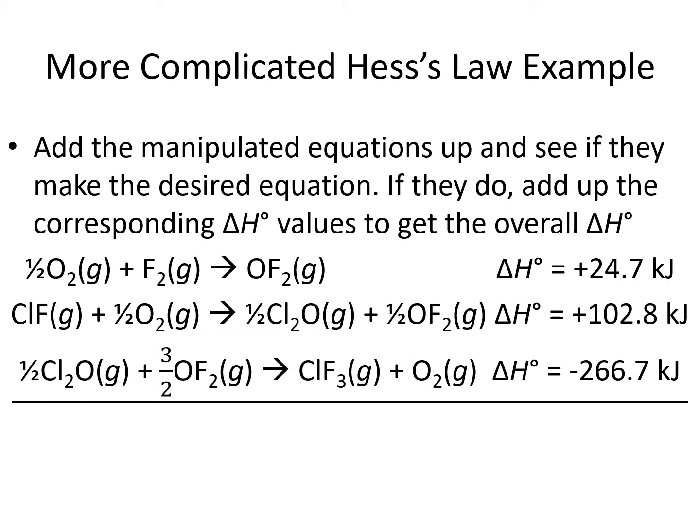Now that we've gotten our equations the way we think are probably correct, we're going to add them to double-check that the step equations add up to the overall equation we're trying to make. Some parts of the step equations are just there because they were part of the reaction that was measured — they end up cancelling out. Our first equation has 1/2 O2 and our second equation has 1/2 O2, both on the left, so they add to make one O2 molecule, which cancels with the one O2 on the right. We also have a 3/2 O2 on the left of our third equation, and 1 O2 plus 1/2 O2 on the right, for a total of 3/2 O2, which cancels out.